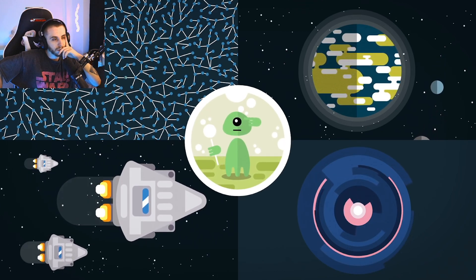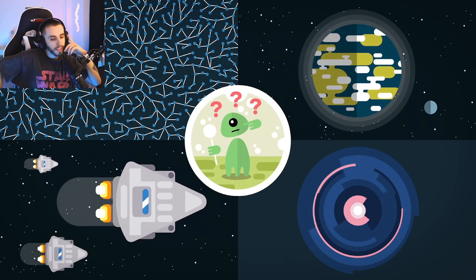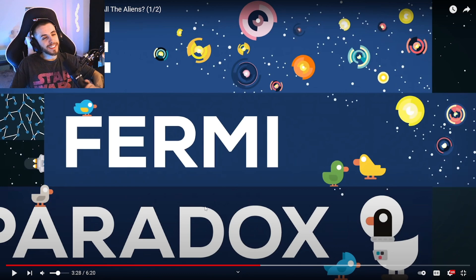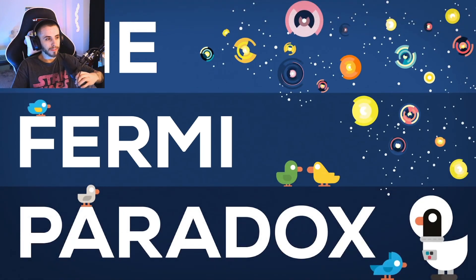Then where are all the aliens? But like, they might not be at that stage yet, you know what I mean? There's definitely aliens out there, 100 percent, right? But like they don't have to be a super race yet. They don't have to be. This is the Fermi Paradox and nobody has an answer to it.